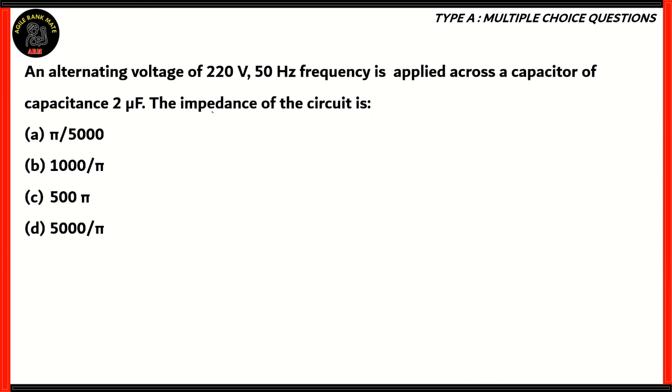Let's look at another question. An alternating voltage of 220 volts, 50 hertz frequency, is applied across a capacitor of capacitance 2 microfarads. Find the impedance of the circuit. How do we calculate impedance?